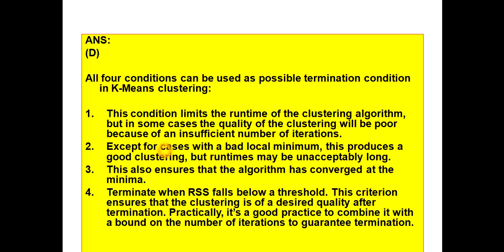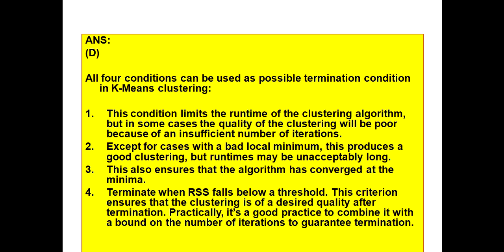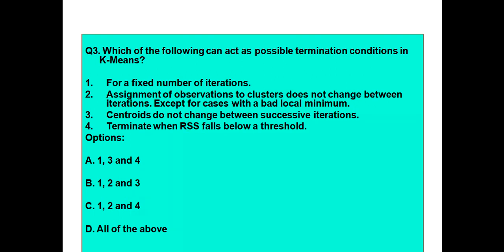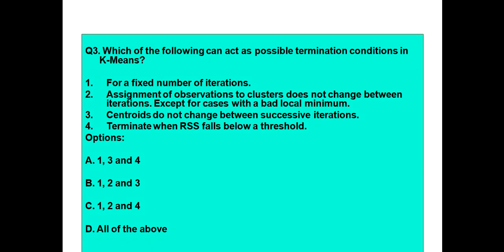Condition two — assignment of observations to clusters does not change except for cases with a bad local minimum — produces a good clustering but run times may be unacceptably long. Condition three — centroids do not change between successive iterations — ensures that the algorithm has converged at the minimum. Condition four — terminate when RSS falls below a threshold — ensures that the clustering is of a desired quality after termination. Practically, it is good practice to combine it with a bound on the number of iterations to guarantee termination. So all four conditions may be used as termination conditions, although each has some drawback.